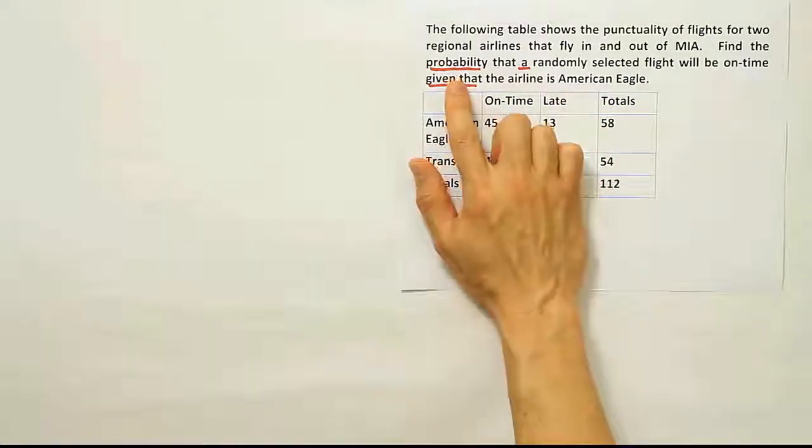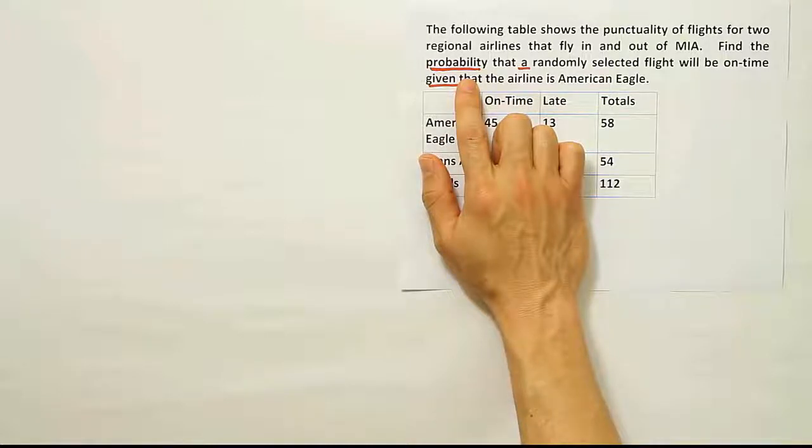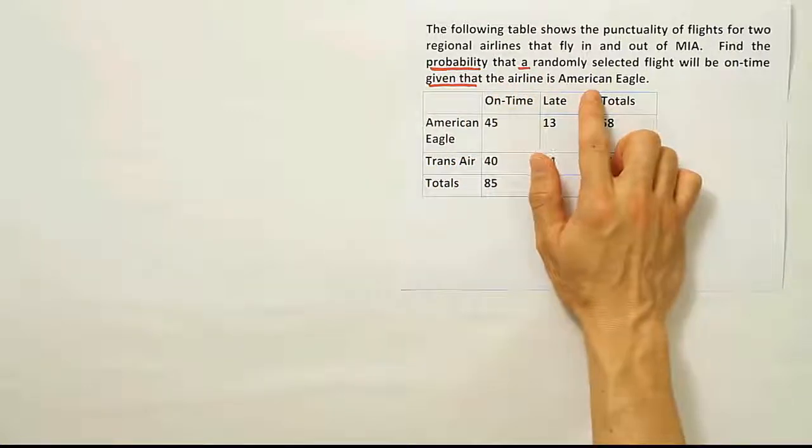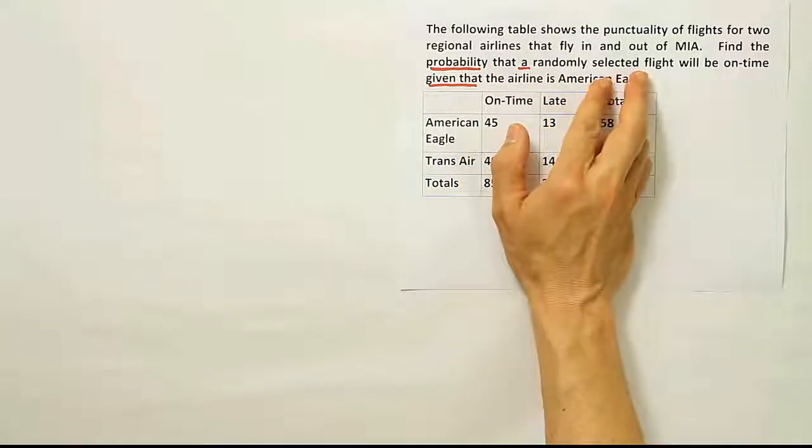Okay, so I've underlined some key phrases here. First of all, it says find the probability, so we know we're working a probability question. Then it says that a randomly selected flight will be on time given that the airline is American Eagle. A randomly selected flight indicates just one flight.